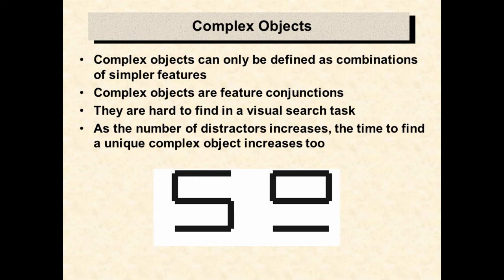The following demonstration will give you the sense that it takes time to find complex objects in a visual search task. In contrast, simple objects defined only by the presence of a unique feature, like a unique color or a unique orientation, seem to pop out immediately from the display. The differences between searching for feature conjunctions and searching for simple features are explained by feature integration theory.